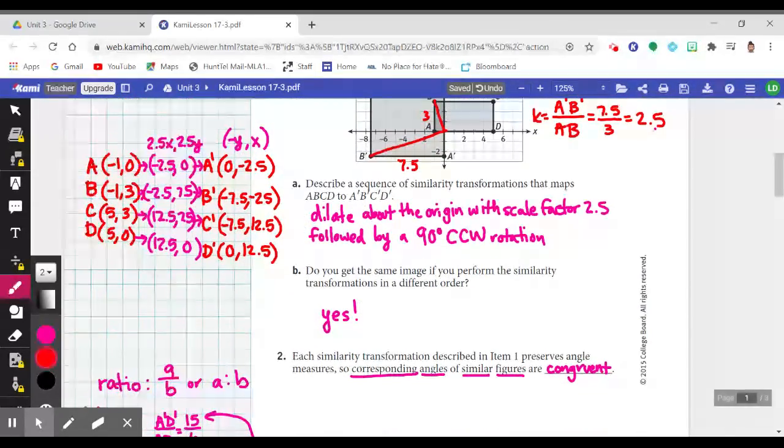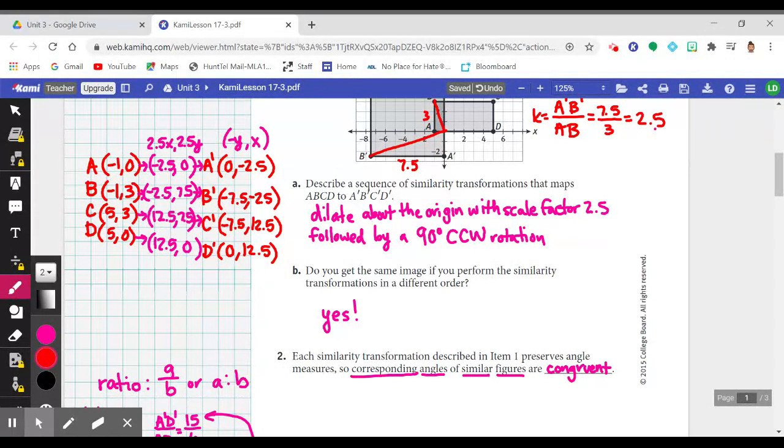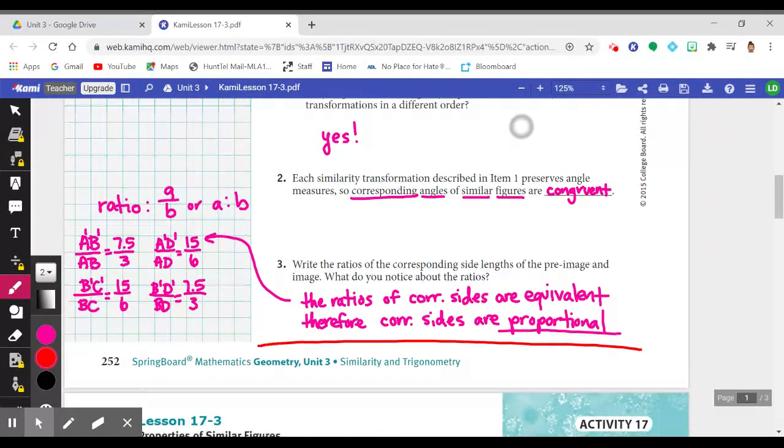And in part B, do you get the same image if you perform the similarity transformations in a different order? Absolutely. We could actually switch these two transformations around, and we still get the same result. Pretty cool with similarity transformations.